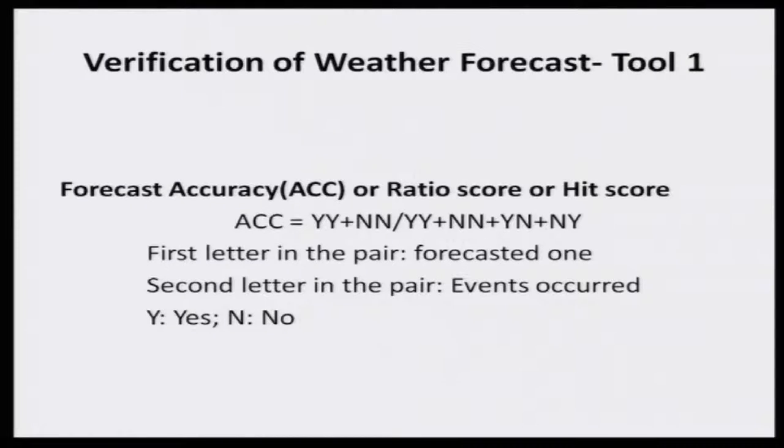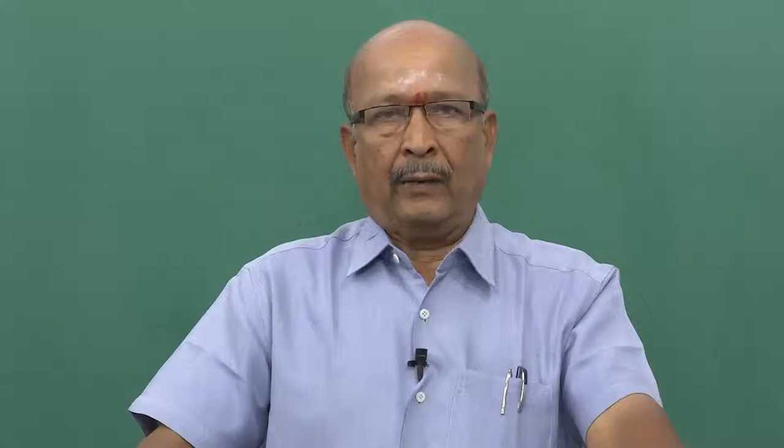There are different tools available — statistical tools and simple tools — to compare or verify the forecasted value and the actual events occurred. For example, suppose tomorrow I forecast rainfall of 10 millimeters. After the day concerned, whether the rainfall was received or not — suppose the predicted value is 10 and the actual value is 0. We enumerate and document many such cases and verify through tools, one of which is the ratio score or hit score.